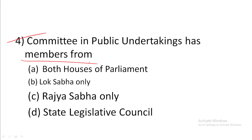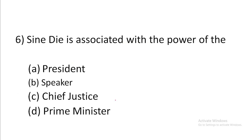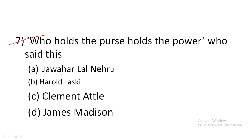Question 4: Committee on Public Undertakings has members from — answer is A: both houses of Parliament, Lok Sabha and Rajya Sabha. Question 5: Unstarred questions require — answer is D: a written answer. Question 6: Sine die is associated with the power of — answer is B: the Speaker.